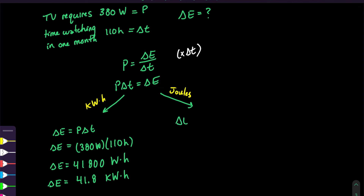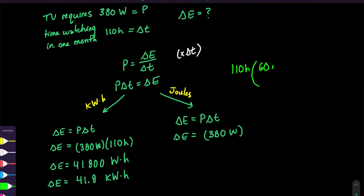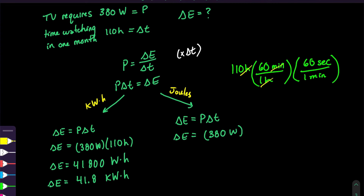Now to answer in joules, it's still the same formula: delta E equals power times the change in time. The only difference is that we need to convert hours into seconds to get SI units and therefore joules. We first convert hours to minutes — 60 minutes per hour — then minutes to seconds — 60 seconds per minute — so the units cancel out.